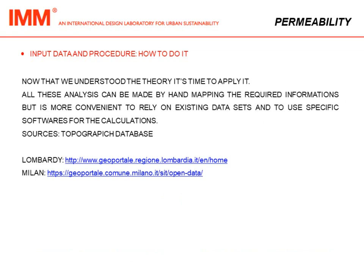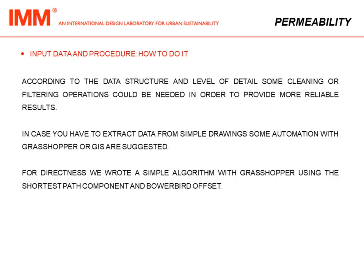Now that we have understood the theory, it is time to apply it. All these analyses can be made by hand-mapping the required information, but it is more convenient to rely on existing datasets and to use specific software for calculation. The sources we use are a topographic database of Milano city and the Lombardy region. Depending on the data structure and level of detail, some cleaning or filtering operations may be needed. In case you need to extract data from simple drawings, some automation with Grasshopper or GIS is suggested.